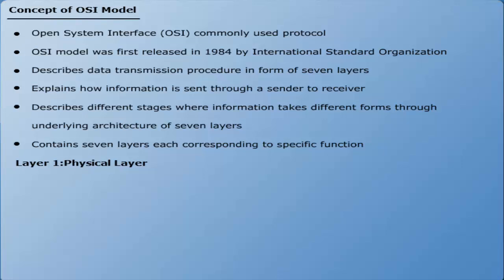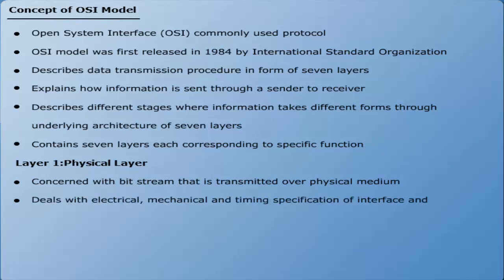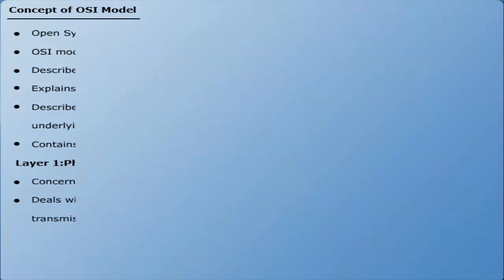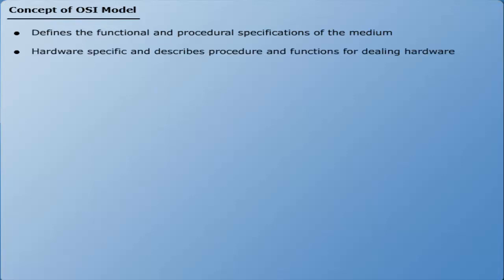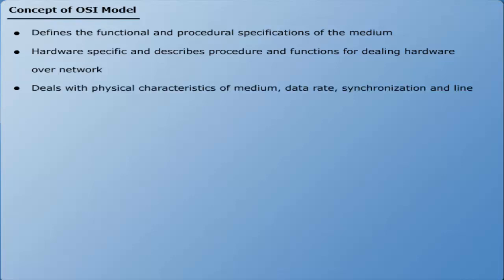Layer 1: Physical layer — concerned with the bit stream transmitted over the physical medium. It deals with electrical, mechanical, and timing specifications of the interface and transmission medium, and defines functional and procedural specifications. The physical layer is hardware specific and describes procedures for dealing with hardware over the network. It deals with physical characteristics of the medium, data rate, synchronization, line configuration, and physical topology.